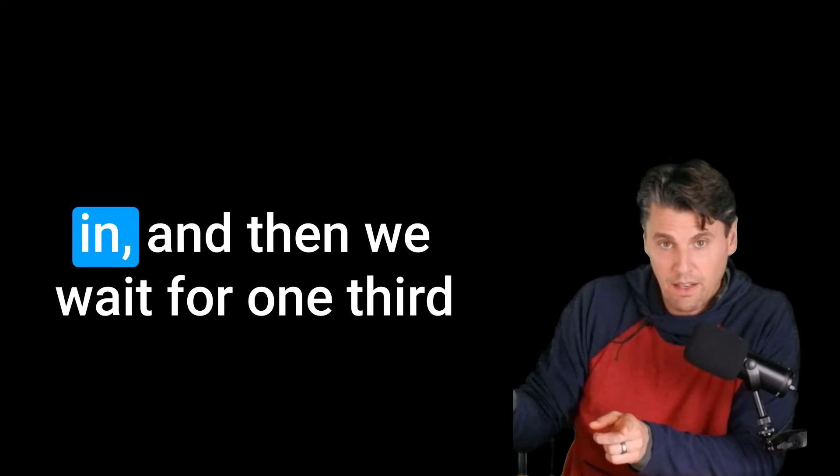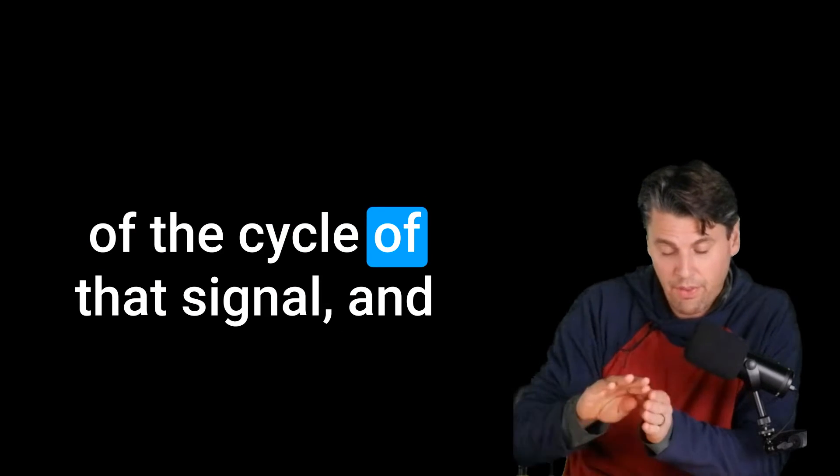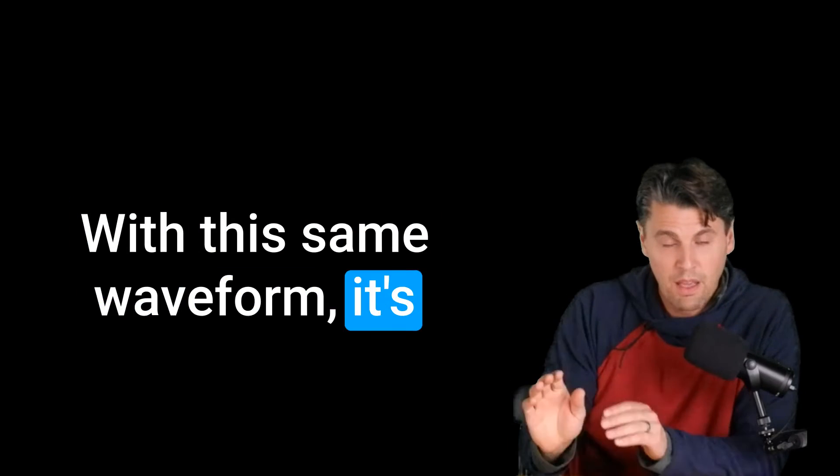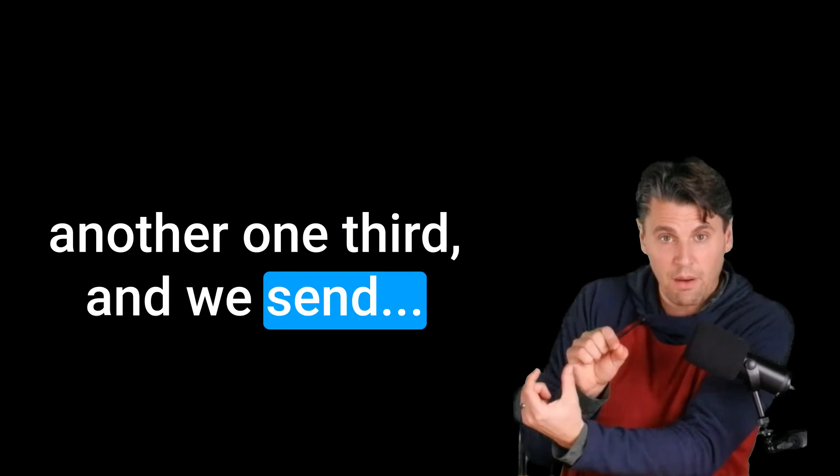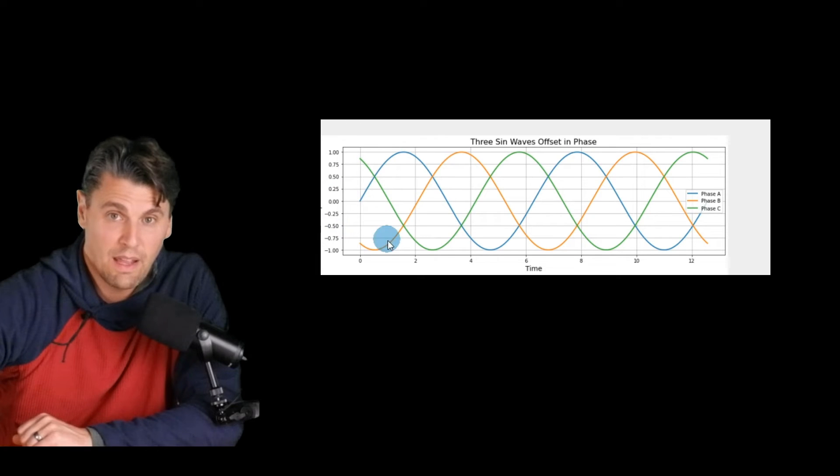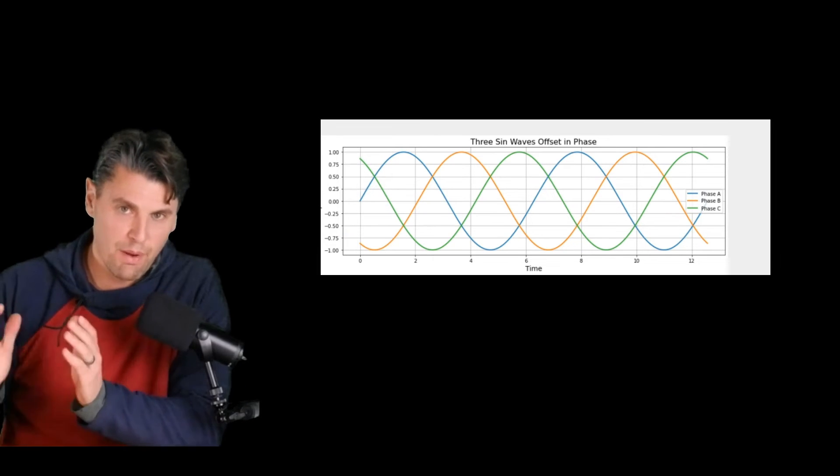That means we send one signal in, and then we wait for one third of the cycle of that signal. And then we send another one in with the same, it's just delayed by one third of the cycle. Then we wait for another one third and we send in. So we get something that looks like this. You can see now we have three different cycles that are going on all at the same time. We're going to use that so we don't have as much ripple in our signal.